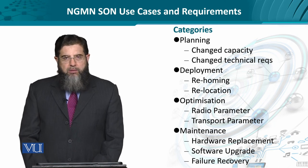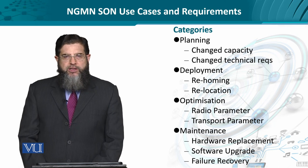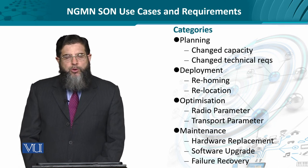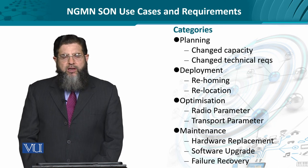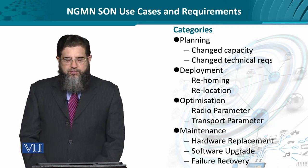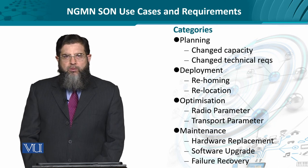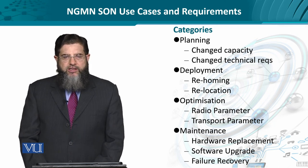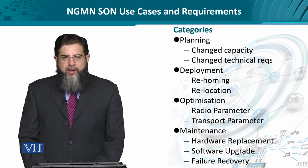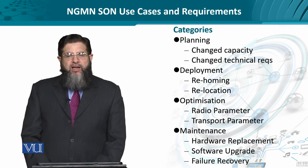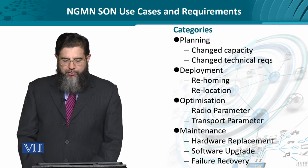In deployment, there is a possibility that some kind of relocation or re-association is required for the network elements — for example, a mobile station has to connect to a home E Node B instead of a Node B. Then, when the network is operating, it could deteriorate in performance.